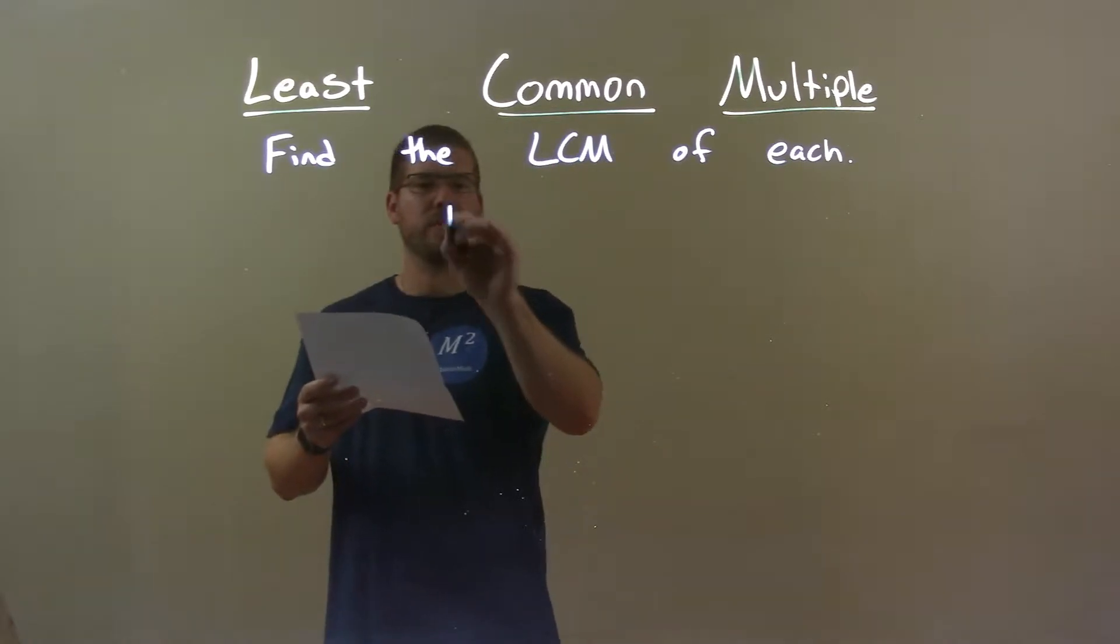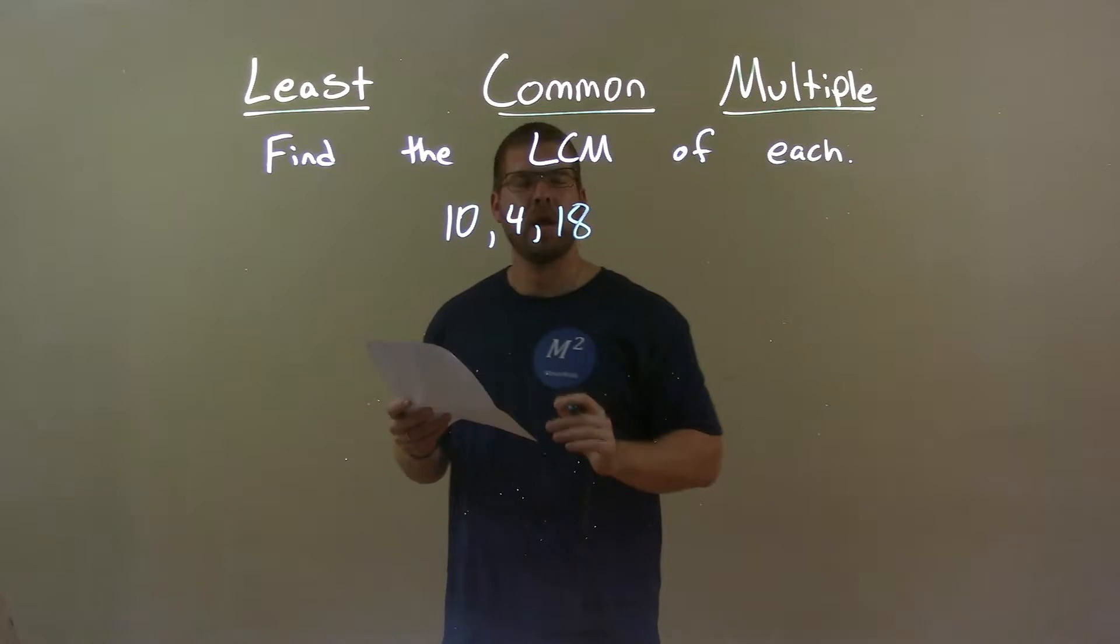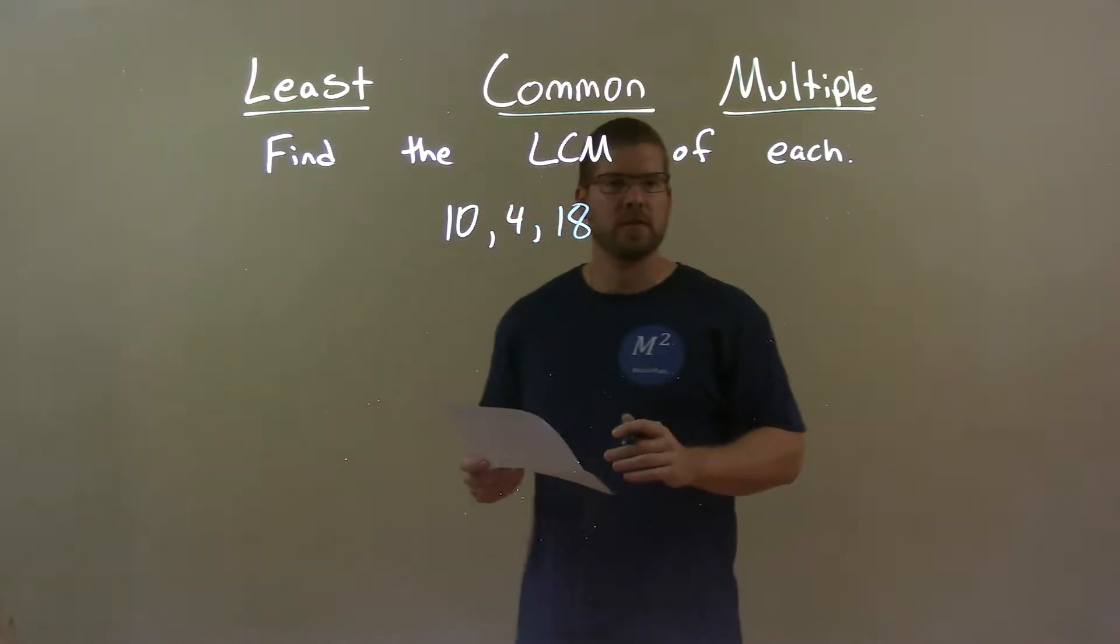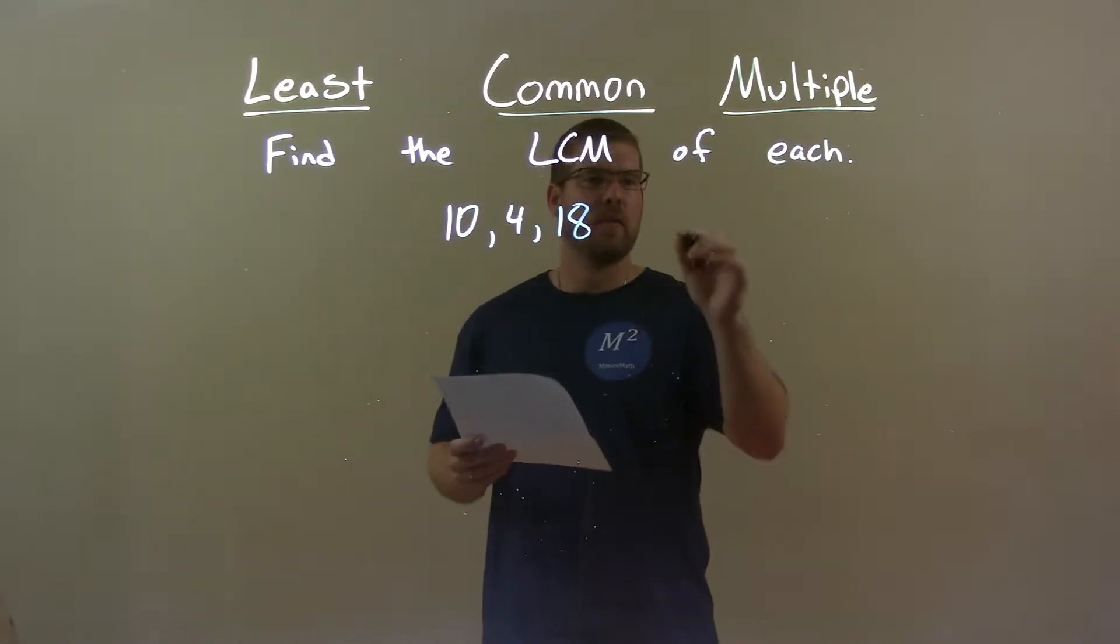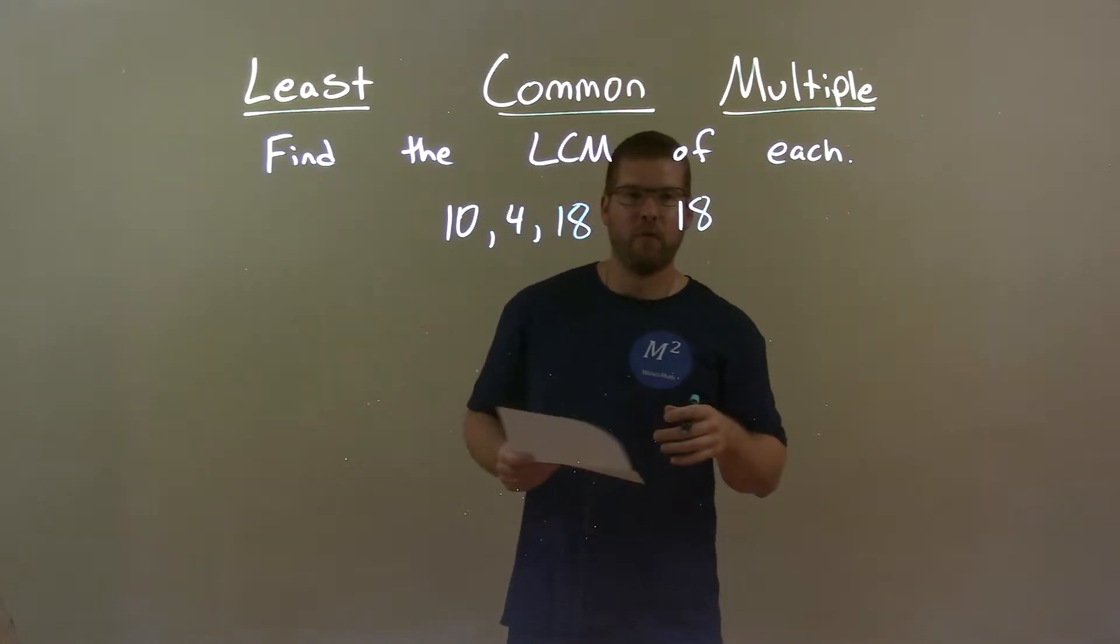So if I was given these numbers, 10, 4, and 18, well first thing, I take 18, the largest of them, and find its multiples. And as I go through, I see if it's divisible by 10 and 4.